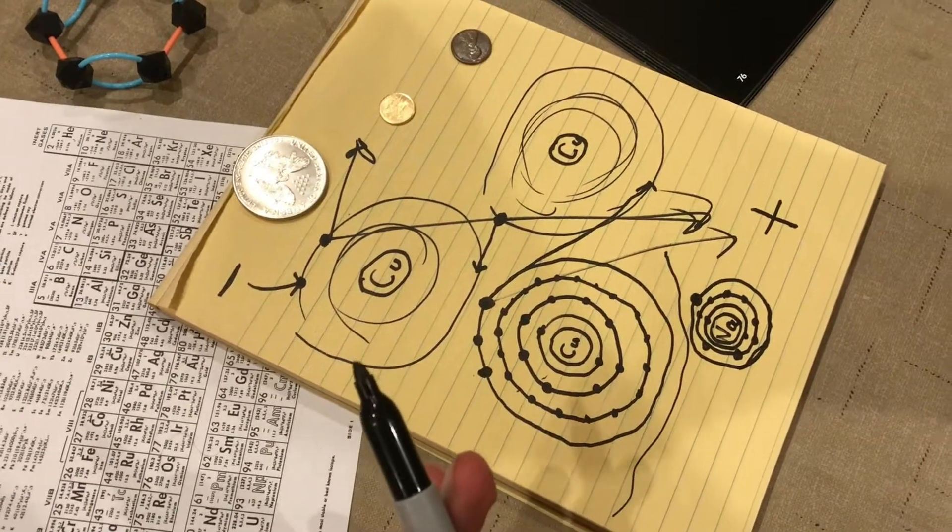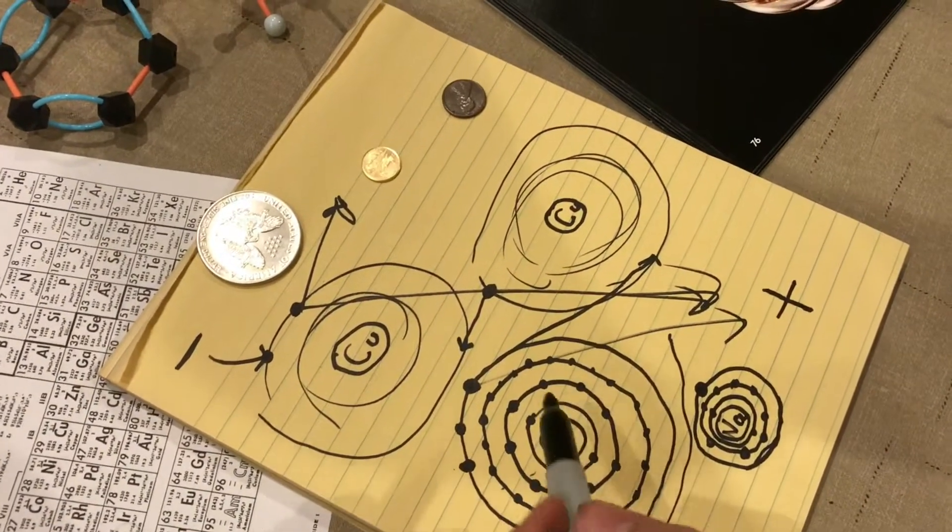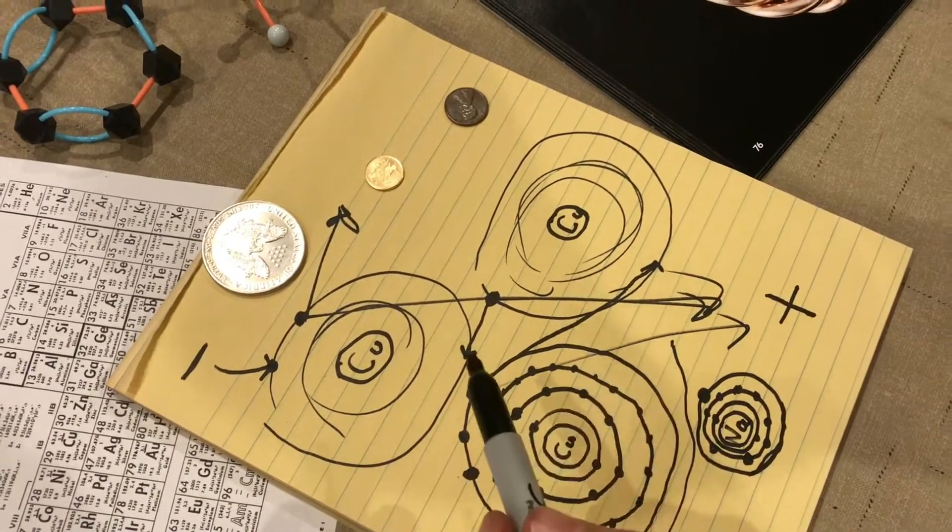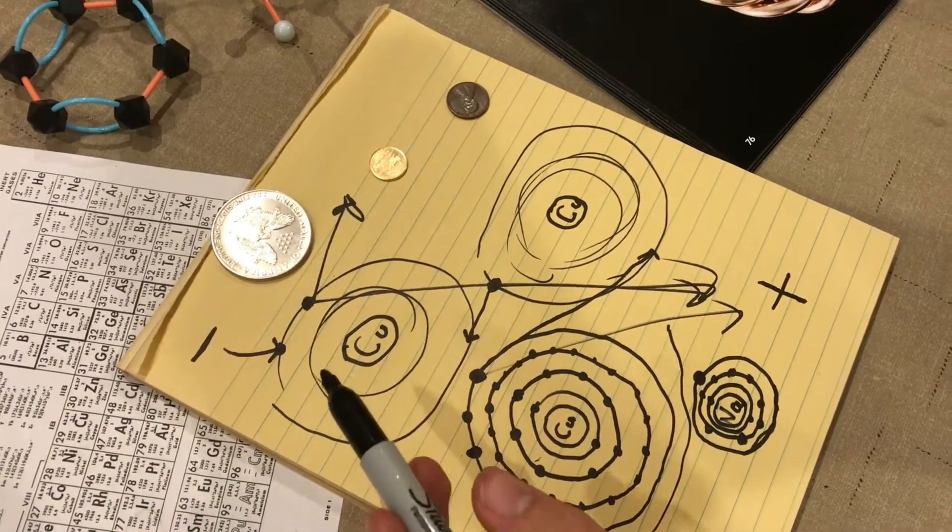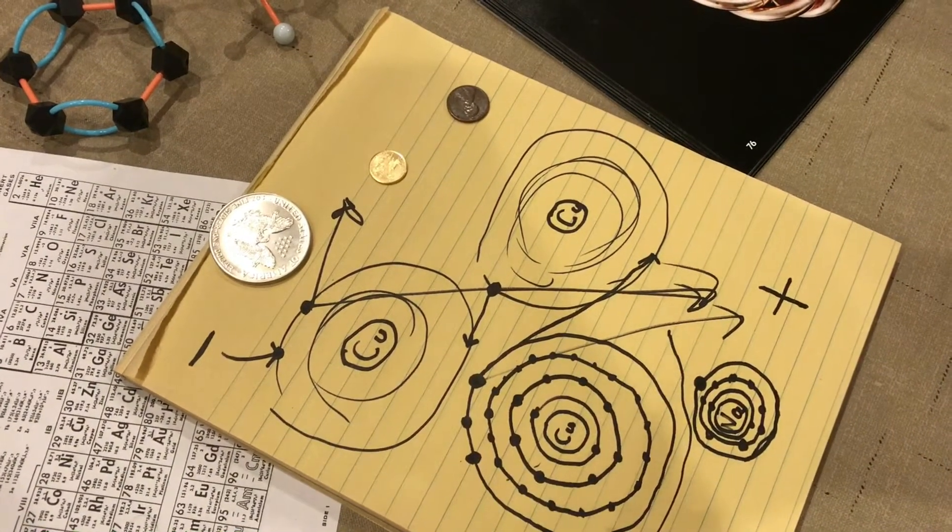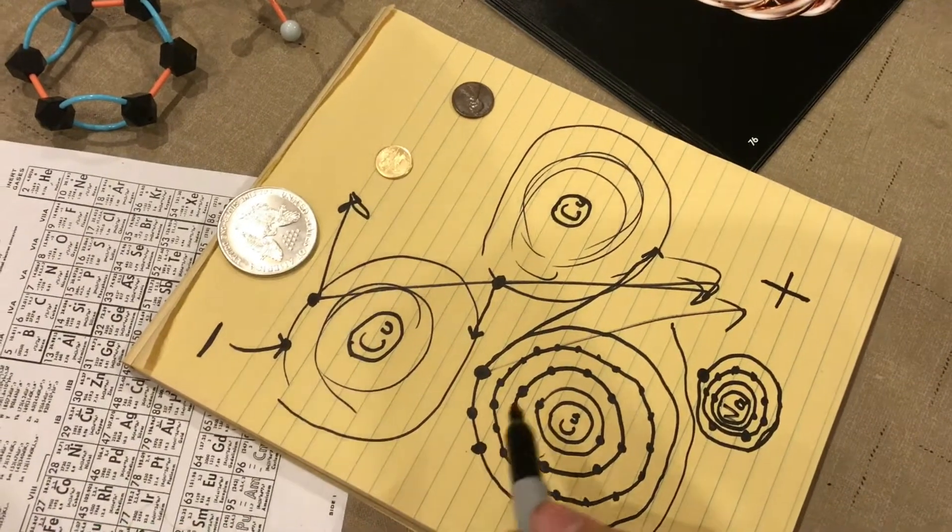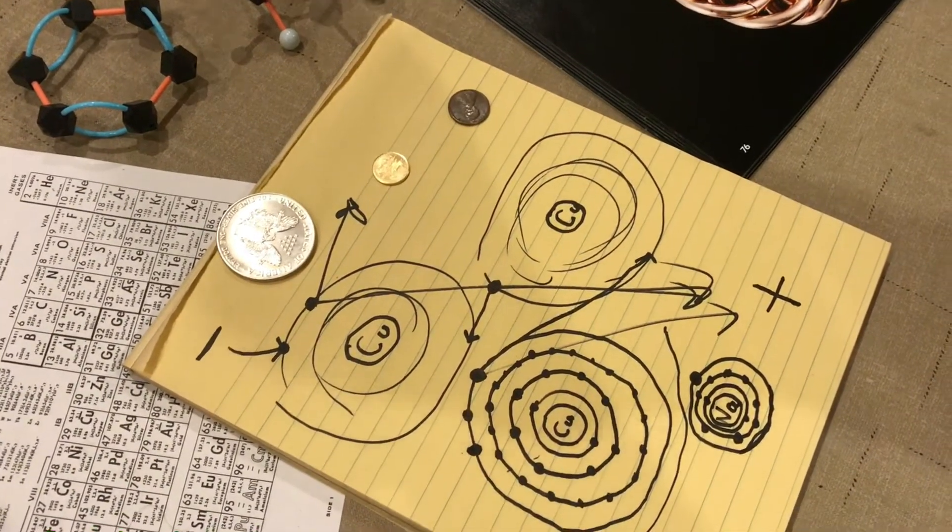So I hope that helps explain why metals are good conductors, especially copper or silver on the atomic level. And it all has to do with electron flow and the positive-negative attractive forces.